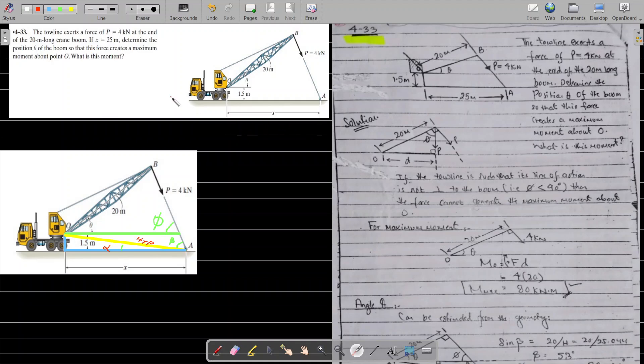If x equals 25 meters, calculate the position theta of the boom so that it creates a maximum moment about point O. We can calculate this moment if you look at the free body diagram of this picture. This is the real force P toe line.